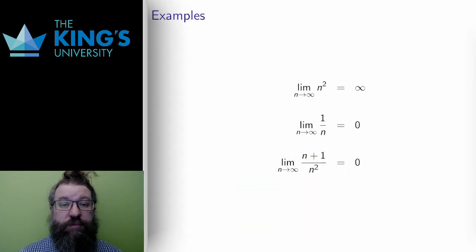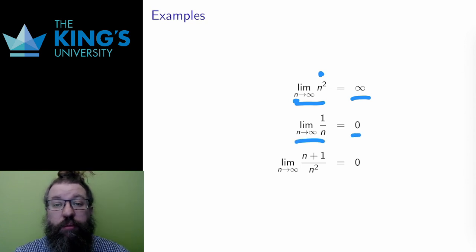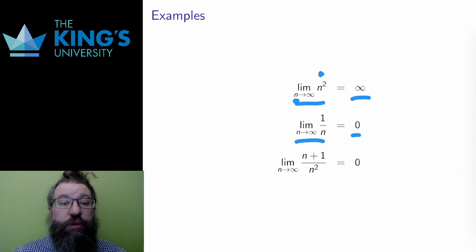Let me start with some examples. The limit of n squared as n goes to infinity is infinity. As n gets larger and larger, n squared likewise gets larger and larger without bound. The limit of 1 over n as n goes to infinity is 0. As n gets larger and larger, the reciprocal gets smaller and smaller, since I'm dividing by larger and larger numbers.